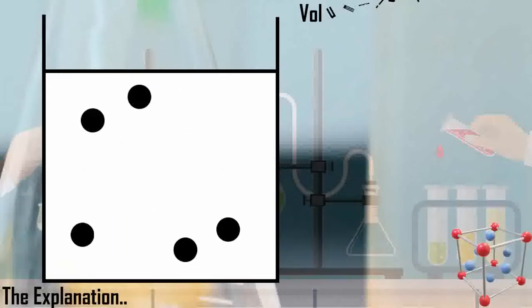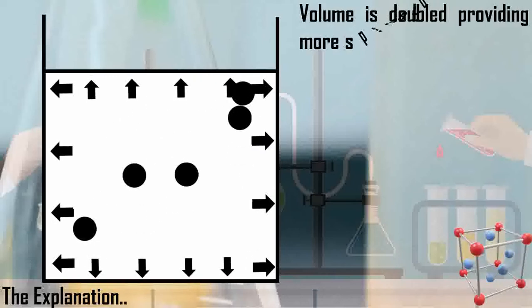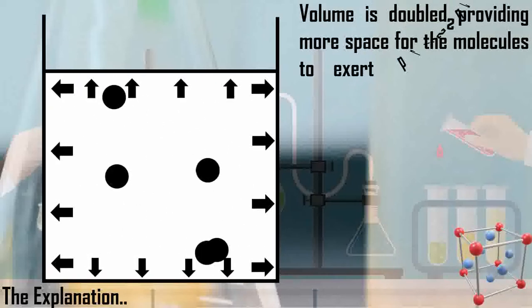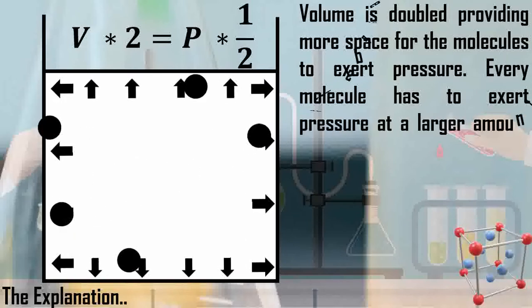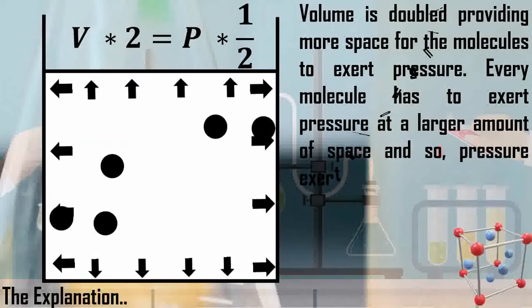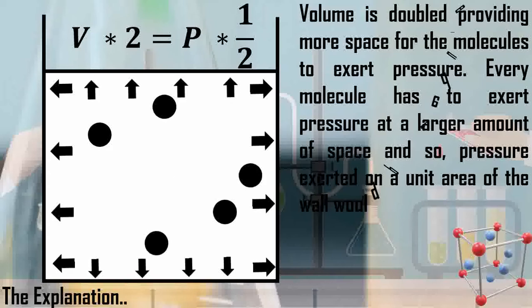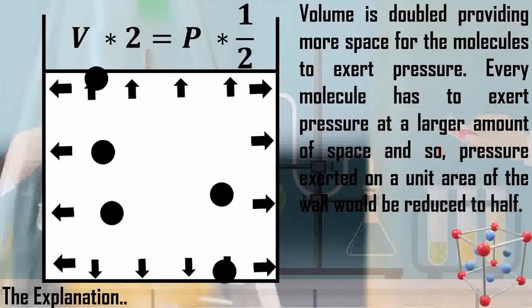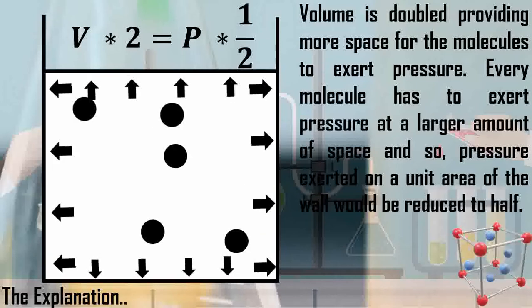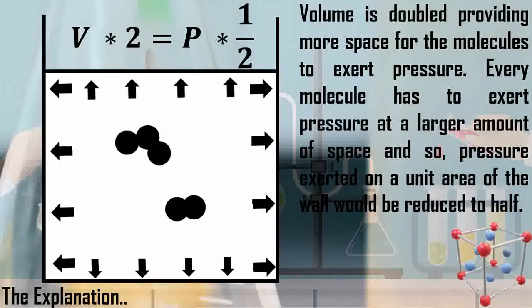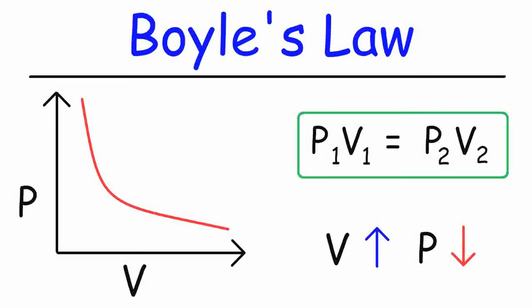Now, if we increase the volume of the container to double, volume is doubled providing more space for the molecules to exert the pressure. They have more space and they have to exert the pressure to a larger amount of area. So, pressure exerted on a unit area of the wall would be reduced to half. Volume is doubled, pressure is reduced to half. This is Boyle's law.